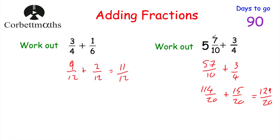Now that's the top-heavy fraction. Because in the question we have mixed numbers, I would convert this into a mixed number at the end. So we see how many twenties go into 129. That would be six — six twenties is 120 — with nine left over. So the answer is six and nine twentieths.